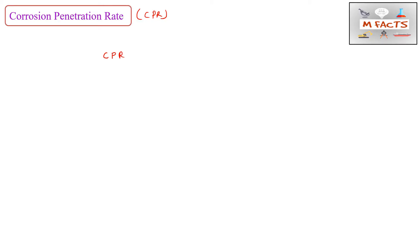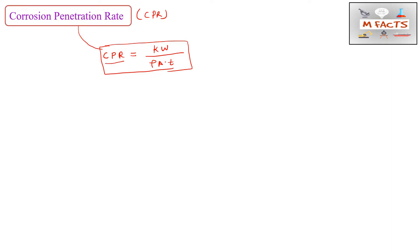This corrosion penetration rate is also known as CPR. CPR may be calculated by the formula: CPR = kW / (ρ × A × t). This is the formula used for calculation of CPR, that is corrosion penetration rate. CPR is also known as thickness loss of material per unit time.